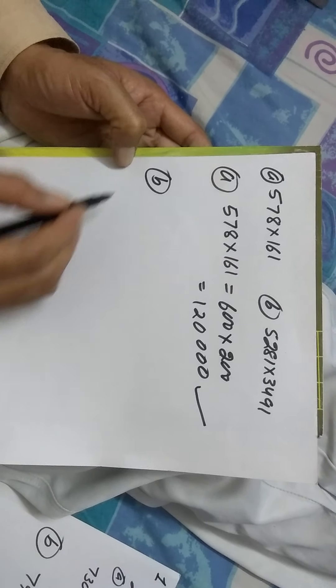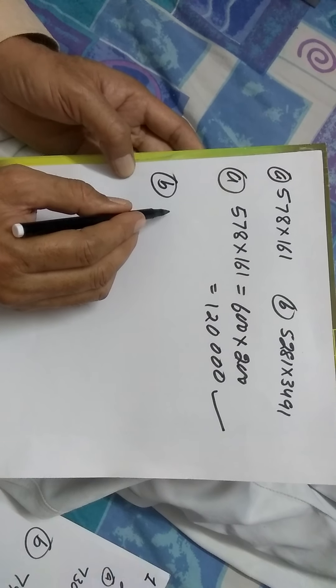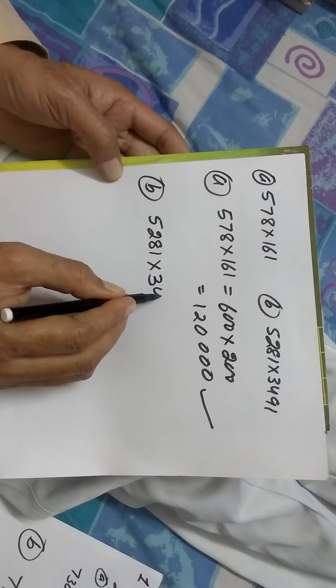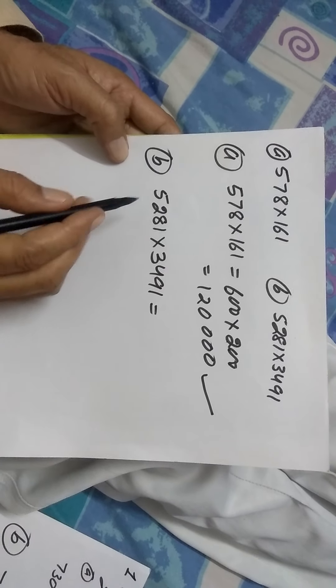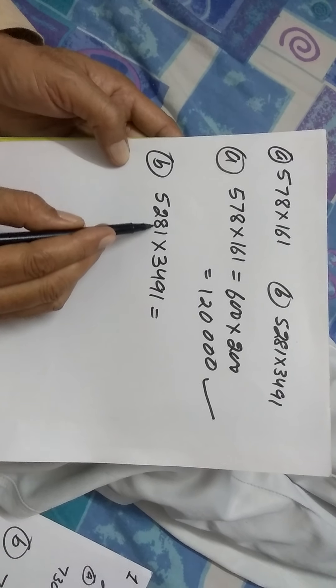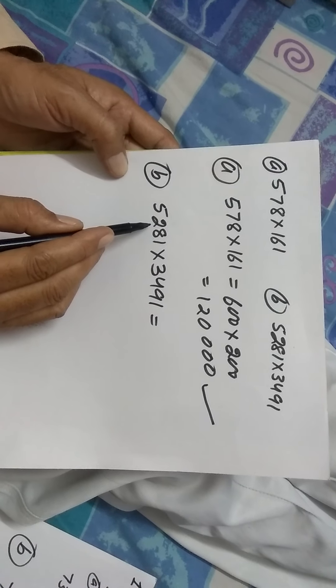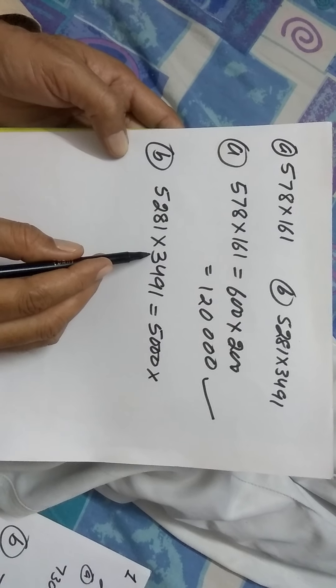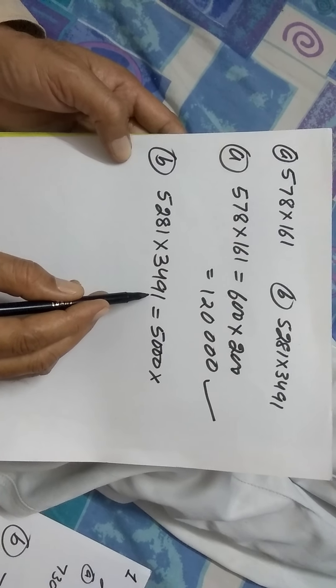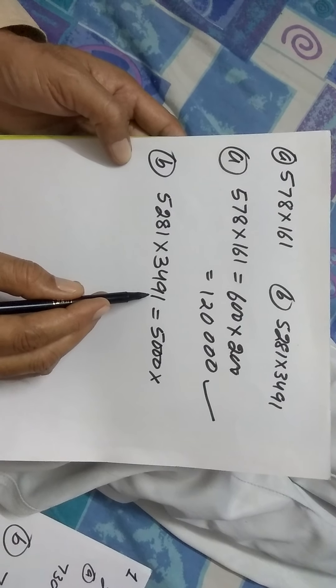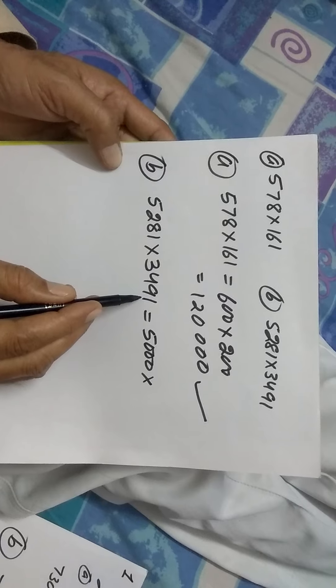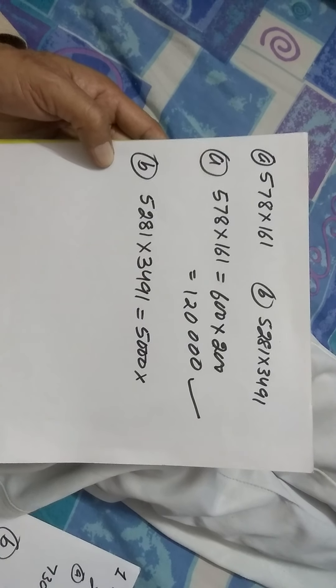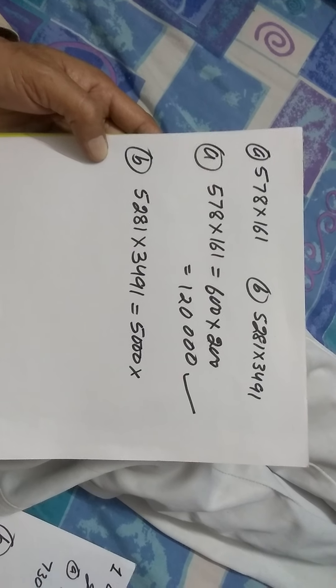Let's take up one more to make it more clear. Here, the two numbers to be multiplied are 5,281 and 3,491. Here, see, 5,281. 281 is less than 500. Therefore, it can be estimated to 5,000. Whereas, 3,491. See, when 491 is to be estimated, this can be estimated to 500. It is very nearly 500. So, either you can make it 4,000 or you may take it 3,000 will not make a big difference.